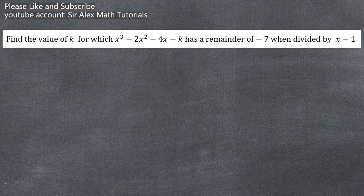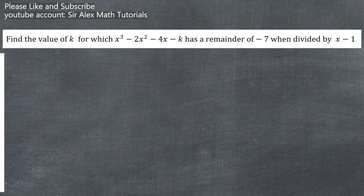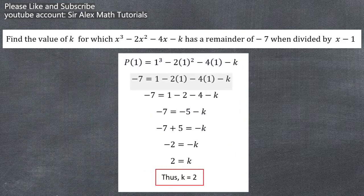Another example: Find the value of k for which x cubed minus 2x squared minus 4x minus k has a remainder of negative 7 when divided by x minus 1. In this problem, it is indicated that there is a remainder, so we will not equate the equation to zero. Instead, we will equate it to negative 7, and then proceed by substituting positive 1 into our equation. By solving, the value of k is 2.